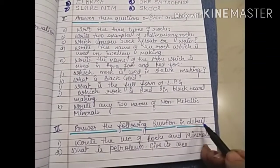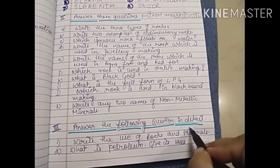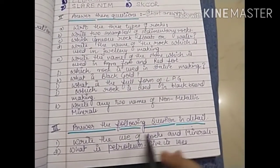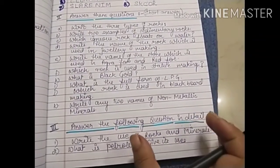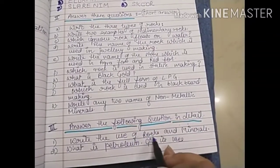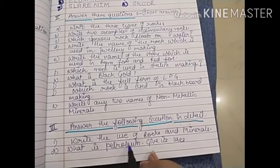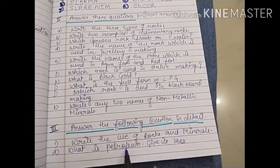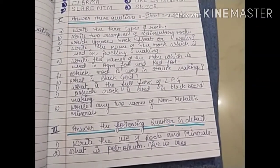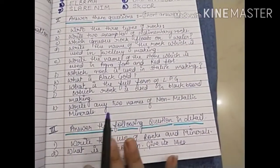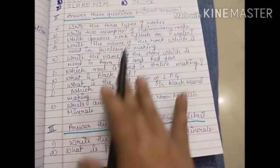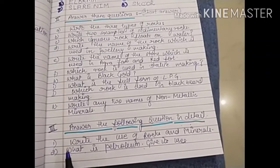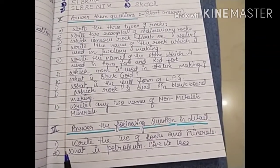The last question is a long answer type — answer the following questions in detail. First: write the uses of rocks and minerals, which is given in the book under the heading 'Use of Rocks and Minerals.' Second: what is petroleum — define petroleum first and then write down its uses. If you complete this worksheet, the complete chapter six will be prepared and this worksheet will definitely help you a lot.